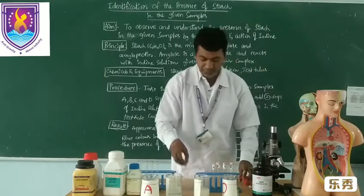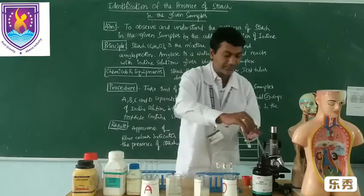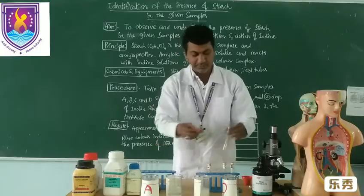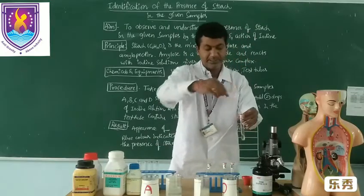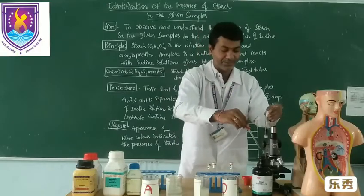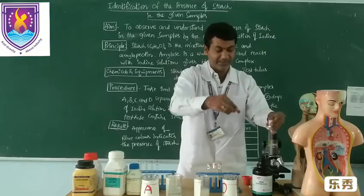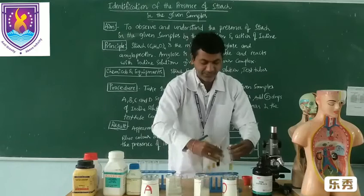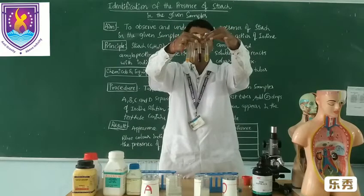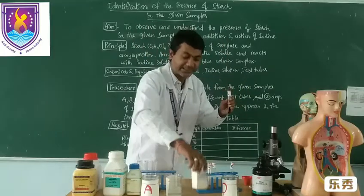Now I am going to add two drops of iodine to each test tube. So adding — and later we can observe. Adding iodine to D as well. So observing: D shows a bluish colour. Now let us see — sample C, this also turns into bluish colour. Let us confirm it. Among these four test tubes, these three — A, B, and D — appear in a light red colour because of the iodine colour. But now sample C turns into bluish colour because the C sample contains starch.